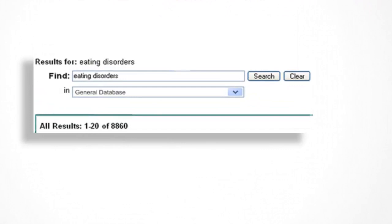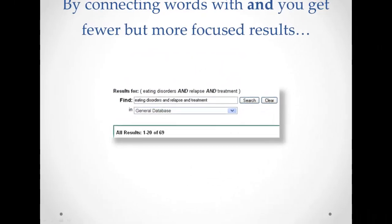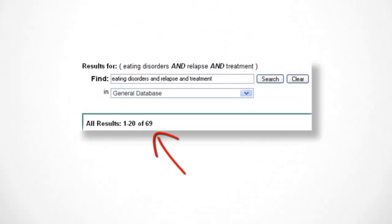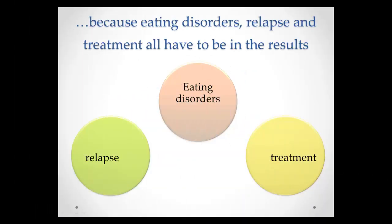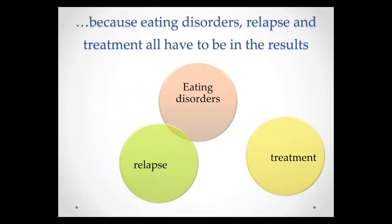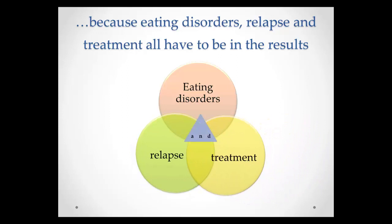Here is how AND narrows the search in a typical database. A search for eating disorders alone finds 8,860 results. When we add relapse AND treatment to the search, we get 69 results. The results are fewer and more focused because eating disorders AND relapse AND treatment all have to be present when we connect the words with AND.